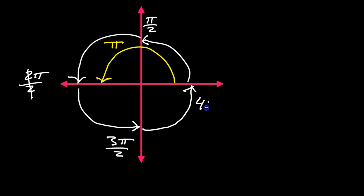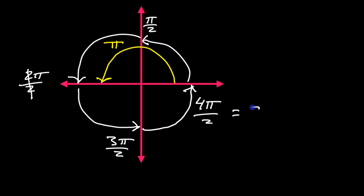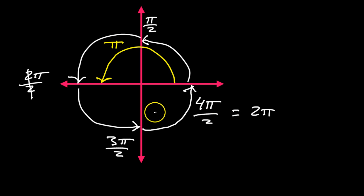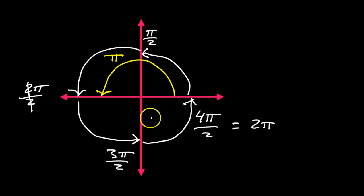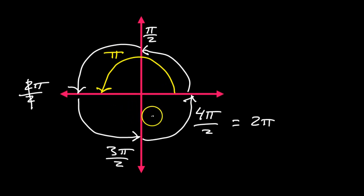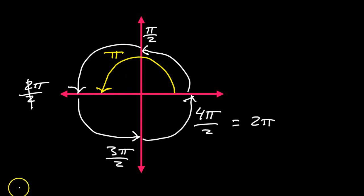So: pi over 2, 2 pi over 2 which is just pi, 3 pi over 2. What could I call this using the same pattern, going all the way back? 3 pi over 2, then 4 pi over 2 — but that's just 2 pi, because 4 divided by 2 is 2. This is how we can work with radians, using pi as a basis.